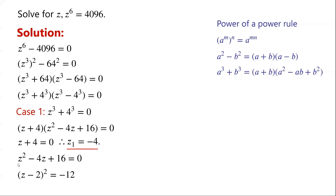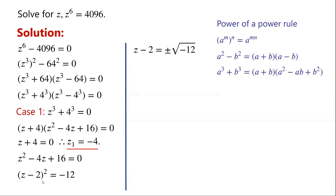Solving z squared minus 4z plus 16 equals 0 by completing the square: (z minus 2) squared minus 4 plus 16 equals 0, so (z minus 2) squared plus 12 equals 0. Moving 12 to the right-hand side and taking the square root of both sides, we get z minus 2 equals plus or minus root of minus 12.